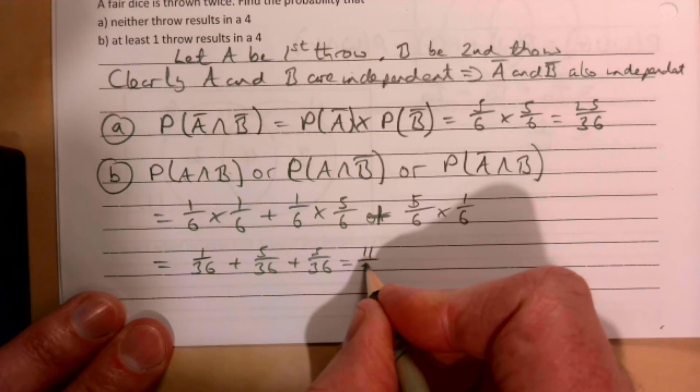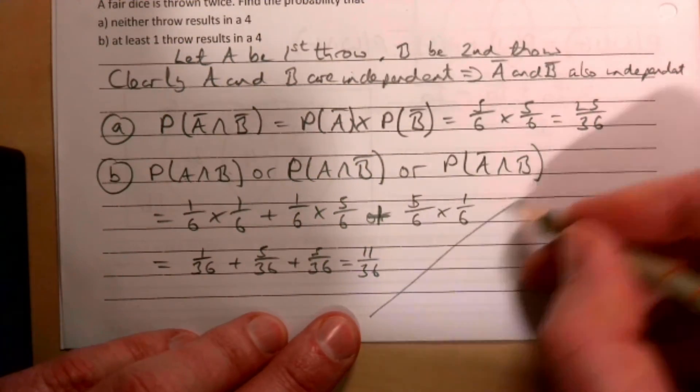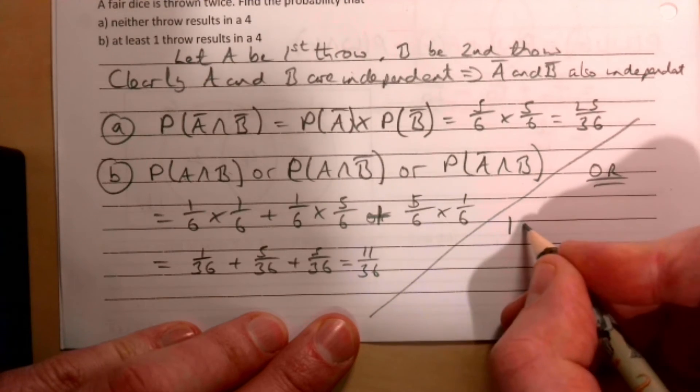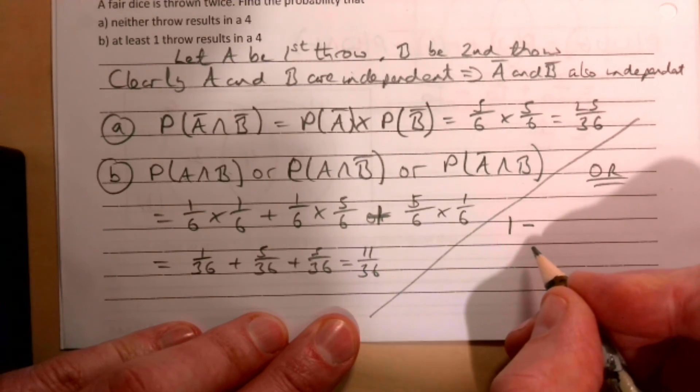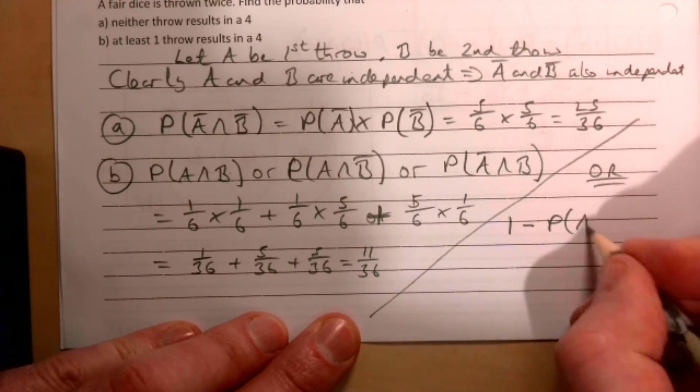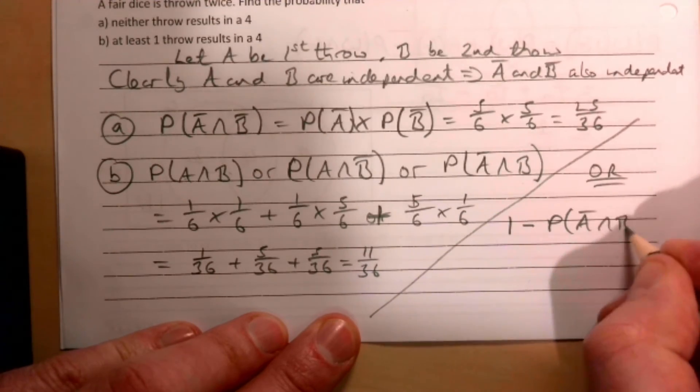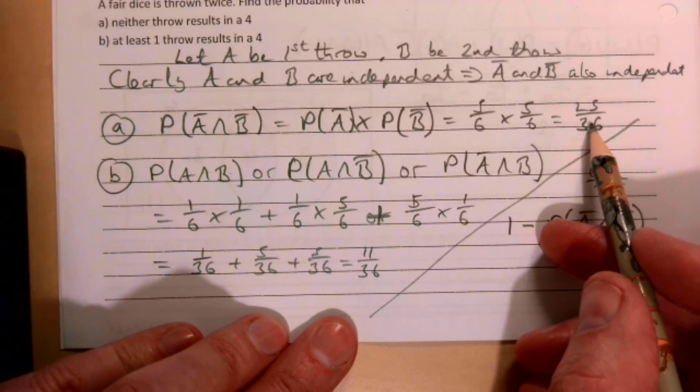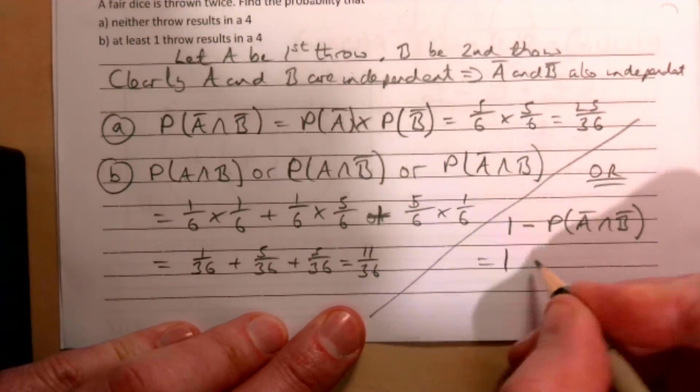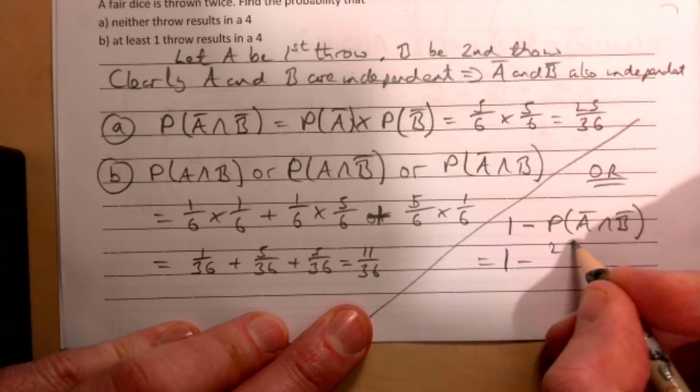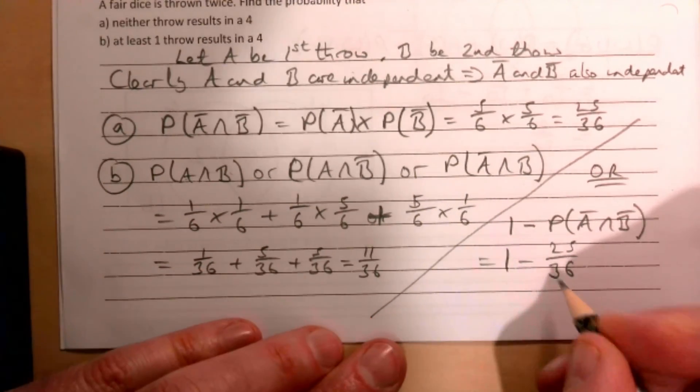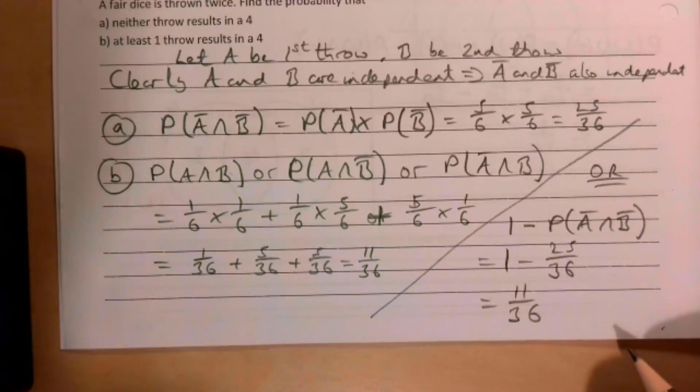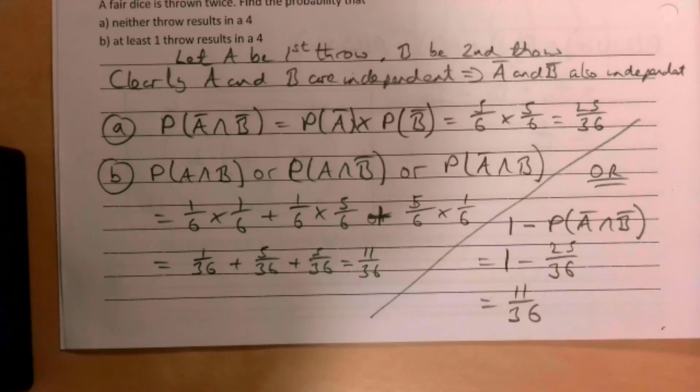The other way of doing this, which is much easier, is one minus the probability of not A and not B, as it's the inverse of part A effectively. It's one minus 25 over 36, and that's 11 over 36. And as you can see, the second way is just a much easier way of doing it.